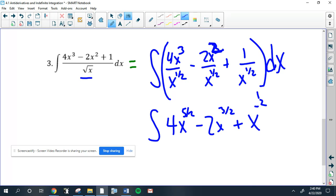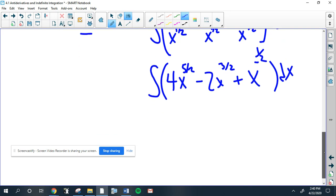Now you integrate. Add one to 5/2, you get 7/2. Multiply by 2/7, so it's 8/7. Add one to the 3/2, you get 5/2. Multiply by 2/5, so it's 4/5. And finally on the last one, you add one to the negative 1/2, you get positive 1/2. Multiply by the reciprocal, which is 2. Add your plus C.